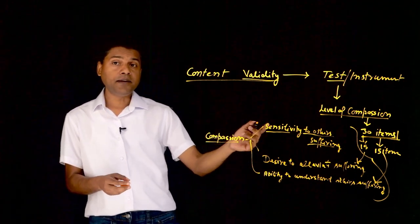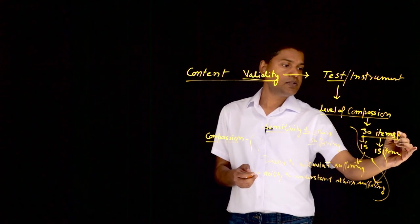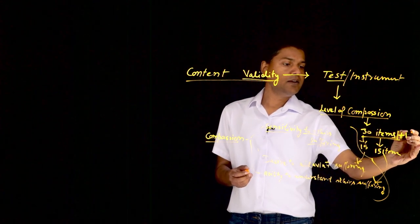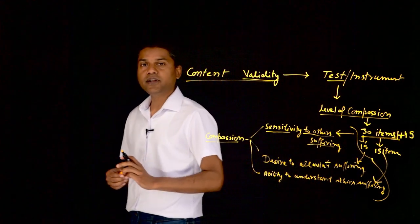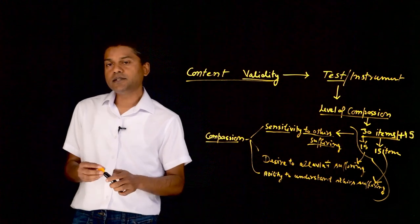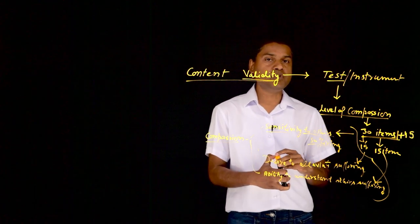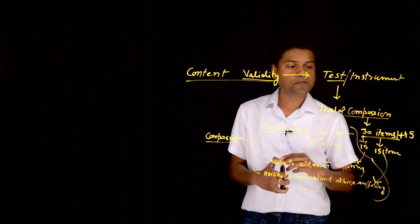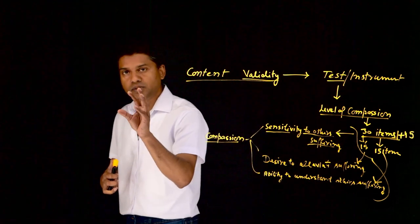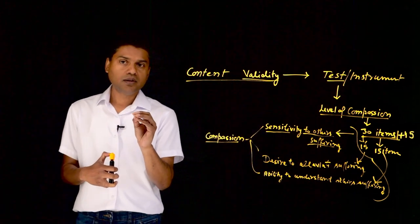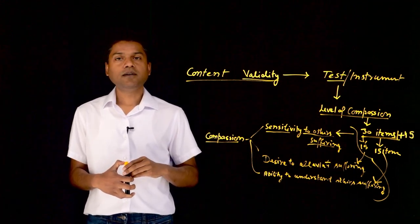To rectify that, I would change the test and add another 15 items from the missing component, which is sensitivity to others' suffering. So when a test is developed, as a researcher, I want to make sure that the items I'm including in my test represent all the components, all the theoretical pieces of the construct that it claims to measure. That's briefly about content validity.